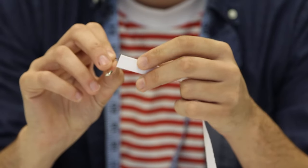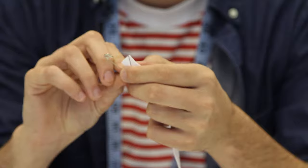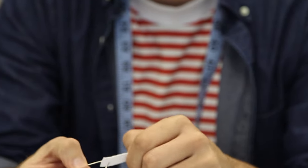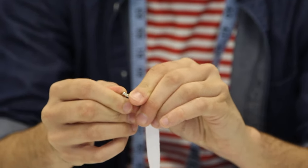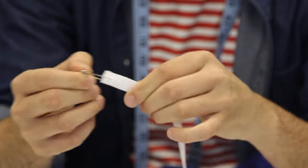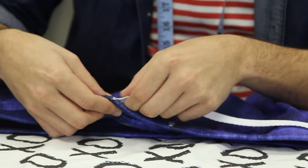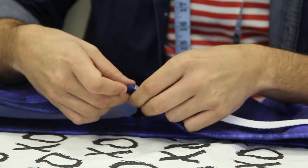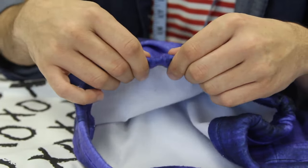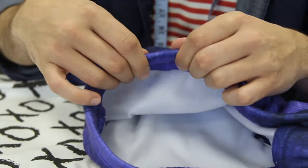To make it a bit easier to feed the twill tape through the waistband, poke a safety pin through one side of our twill tape. Be sure to give yourself enough twill tape to tie your pants. Then, push it through one of the buttonholes and inch your way around the waistband by pushing and pulling the safety pin.